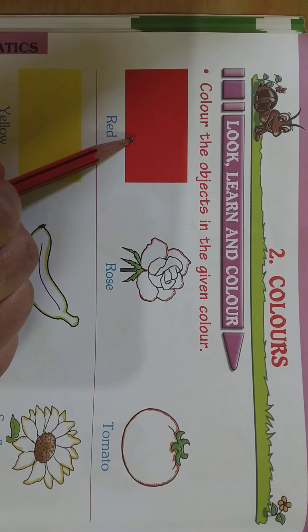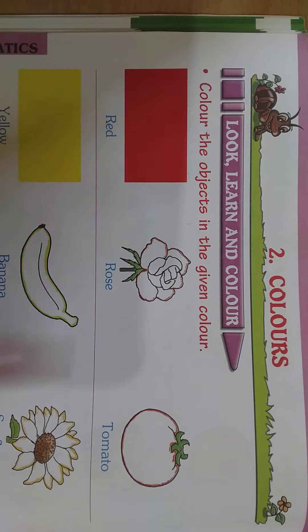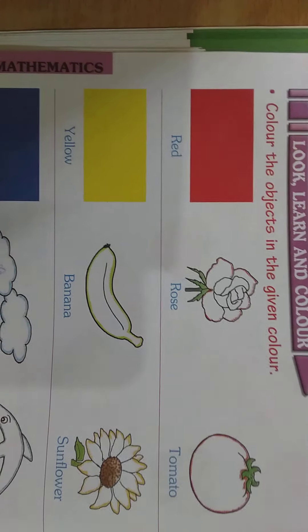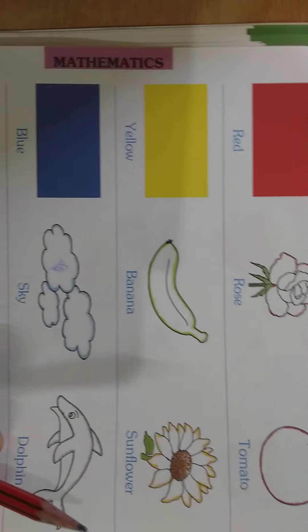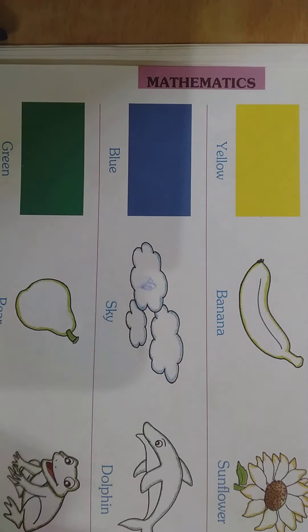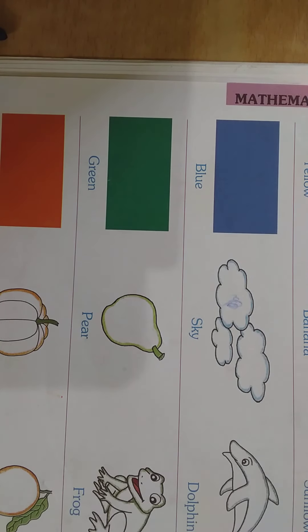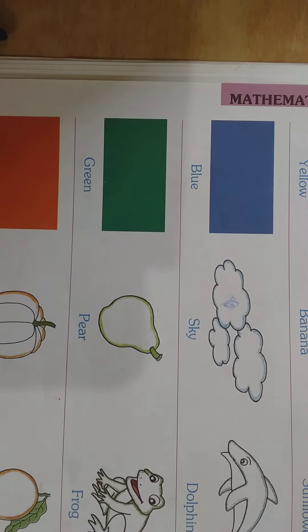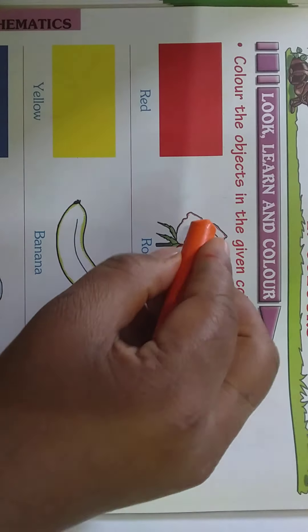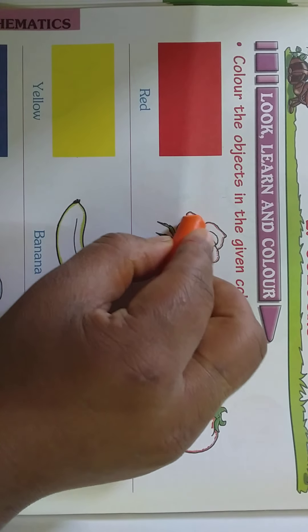Which color is this children? It is red color. This is yellow color. This is blue color. This is green color and this is orange color. Now we will color the rose with the red color.